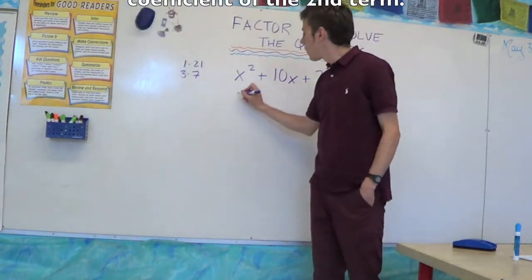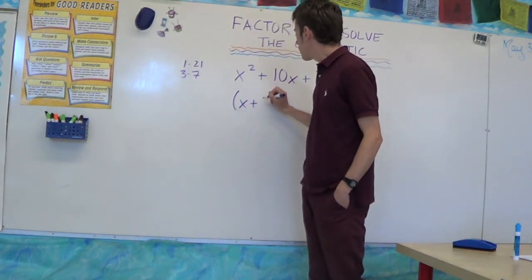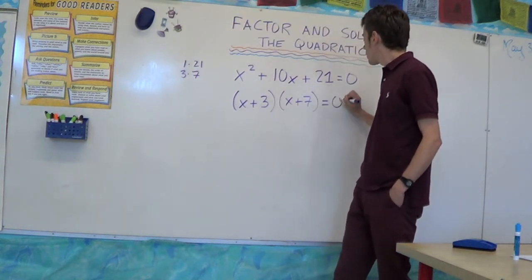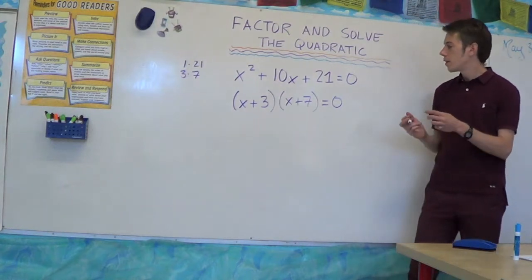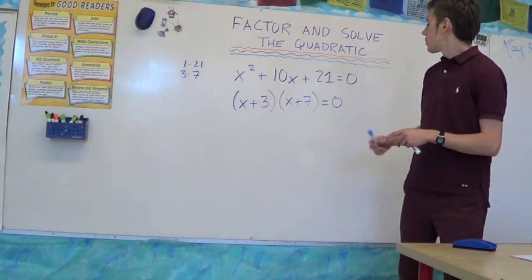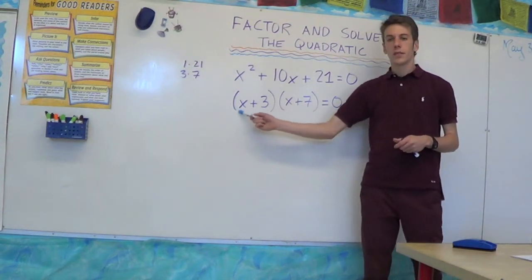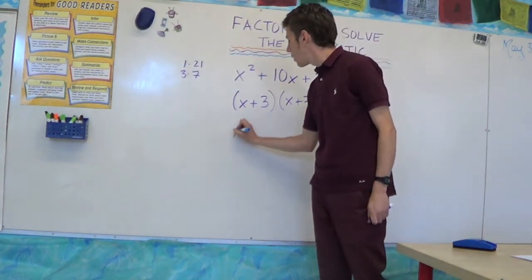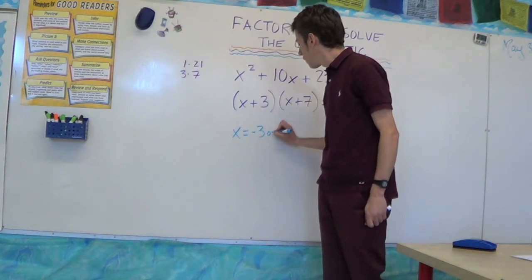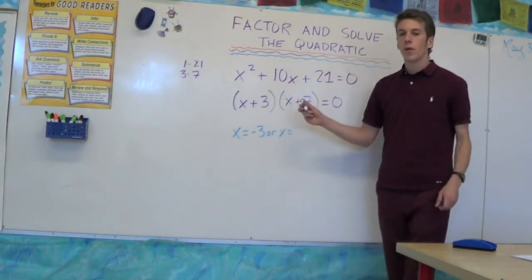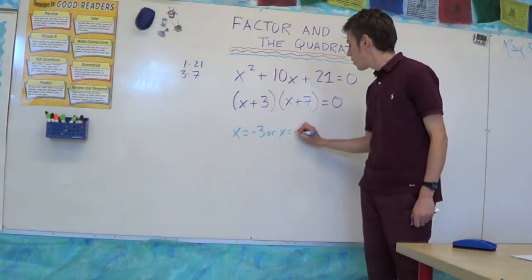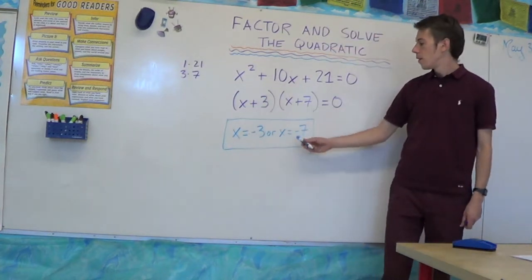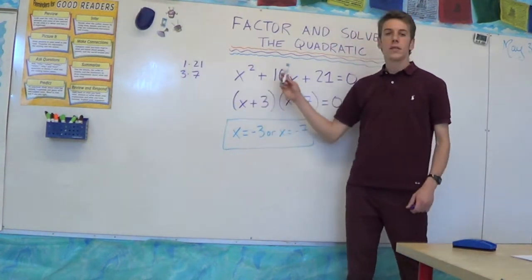So to factor this quadratic, we can split it into (x + 3) and (x + 7). So x plus three times x plus seven equals zero. To make this product come out to zero, either this has to be zero or this has to be zero. To make the left parenthesis zero, x would have to be negative three. To make the right parenthesis zero, x would have to be negative seven. So those are our two solutions — notice they're the opposites of the two numbers we found to complete our puzzle.